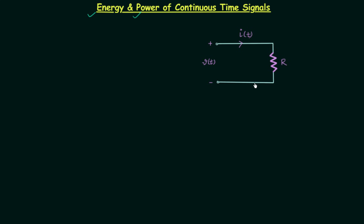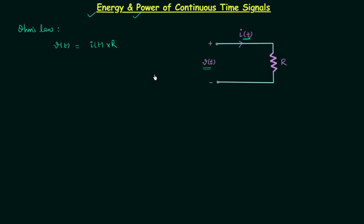You can see one electric circuit on your screen. In this circuit we have resistance R, across which the voltage is equal to V(t) and the current through resistance R is equal to I(t). From Ohm's law, we already know voltage V(t) is equal to current I(t) multiplied with the resistance R. We are interested in calculating the total energy and average power of continuous time signals, so we will focus on instantaneous power.